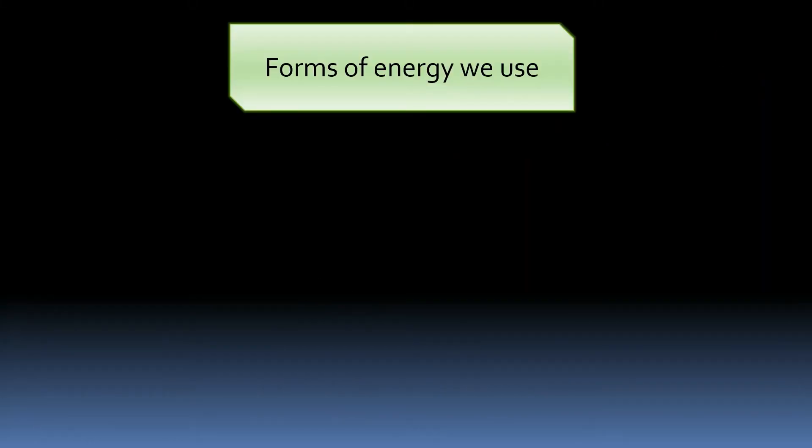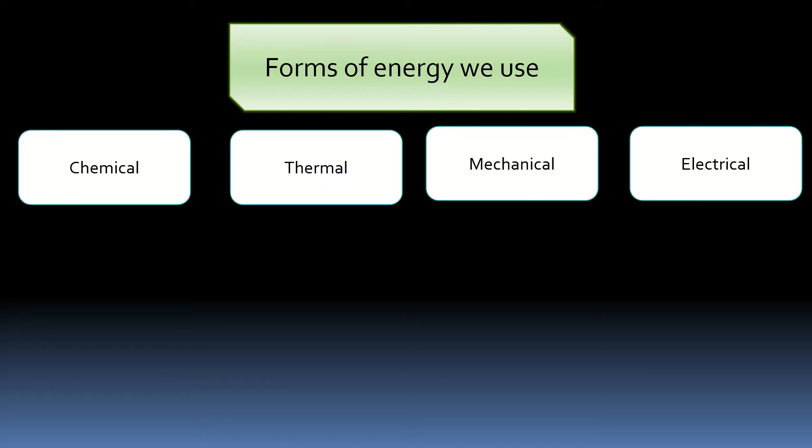What are the different forms of energy which we use in our daily lives? These are chemical, thermal, mechanical and electrical. Let's see examples of these to get more clarification in our minds and also we will discuss the units.